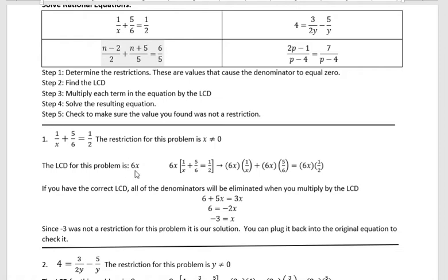We take 6x and multiply it times that entire equation. That looks like 6x times 1 over x, 6x times 5/6, and 6x times 1/2. If you've chosen the correct LCD, all the denominators will be eliminated when you multiply by the LCD. The x's cancel, 1 times 6 gives us 6. Here the 6's cancel and we have 5x. And over here 2 goes into 6 three times leaving 3x.